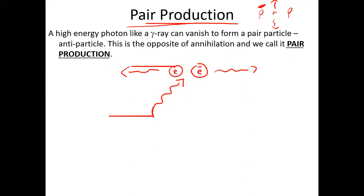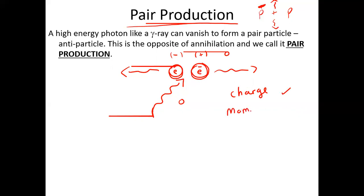The energy of the photon determines what size of particles can be produced. Everything has to be conserved — energy and mass, charge, and momentum. The charge of a photon is zero. We produce a negative electron and a positron, so the overall charge out is zero as well. That's why we have two particles produced moving in different directions.